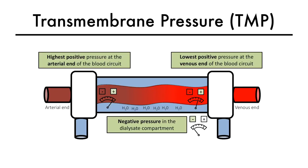In the older dialysis machines, transmembrane pressure was manually calculated by the dialysis personnel based on goal ultrafiltration needs. In modern dialysers, this pressure gradient is automatically calculated and generated by the dialysis machine based on volumetric control of ultrafiltration.